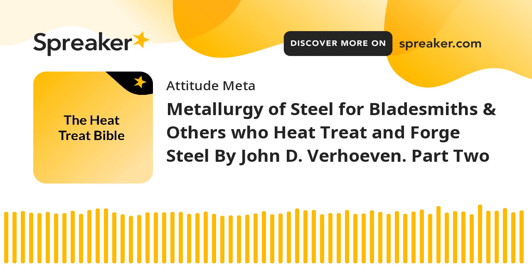Consider the following simple experiment. A steel of composition 0.4% C is first heated to 850°C (1562°F) and held for around 10 minutes. After this short hold all the grains consist of pure FCC austenite grains with a composition of 0.4% C. Imagine we are looking at the steel in a hot stage microscope and see a region of only three grains as shown in Fig. 3.4. The hot stage temperature is then reduced to 760°C (1400°F) and the sample slowly cools to this temperature. What happens to the microstructure?